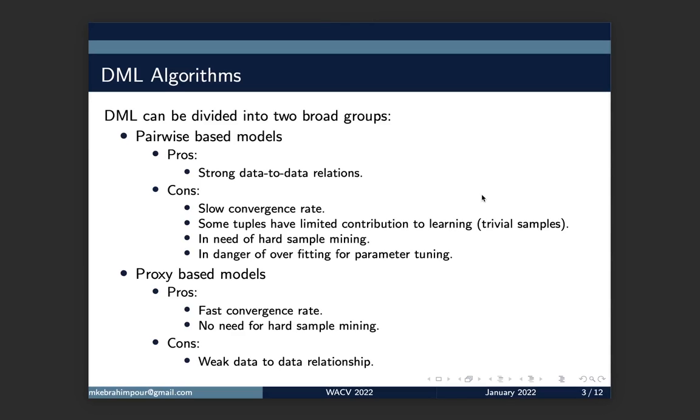Deep Metric Learning algorithms can be divided into two broad groups. The first group is pairwise-based and the second group is proxy-based. The pairwise-based models have really strong data-to-data relationships, but their convergence rate is slow. We are in need of hard sample mining, which increases the danger of overfitting. The proxy-based models don't have data-to-data relationships, but they converge faster than the pairwise-based models and there is no need for sample mining.